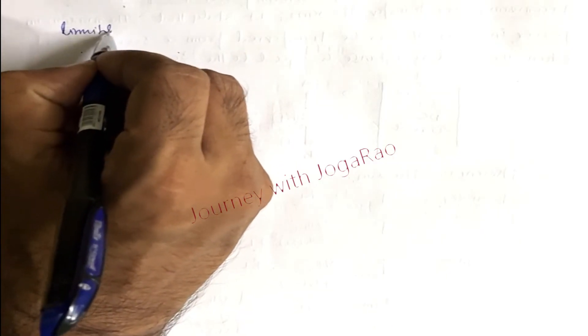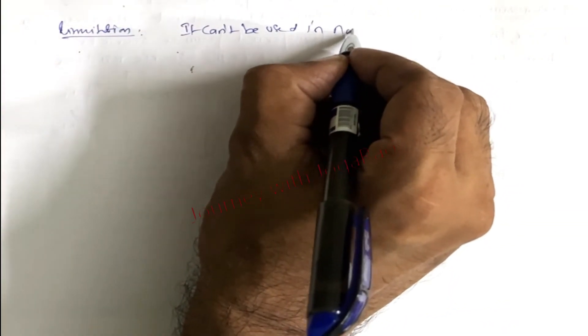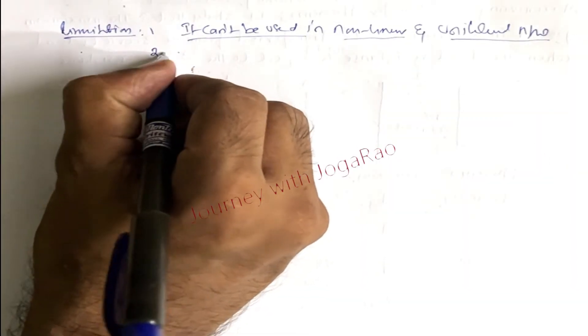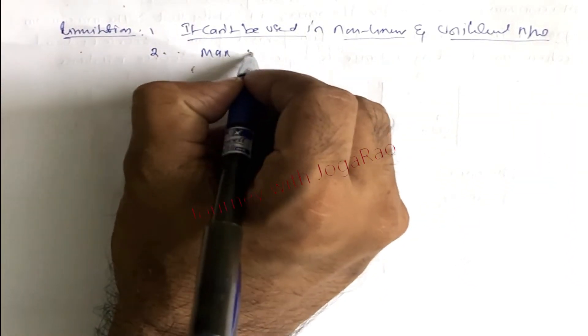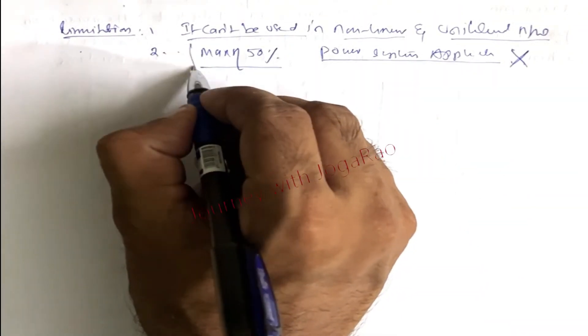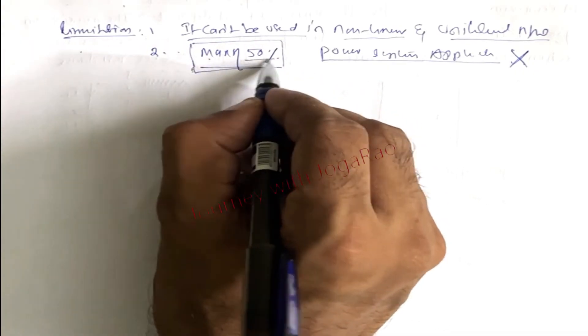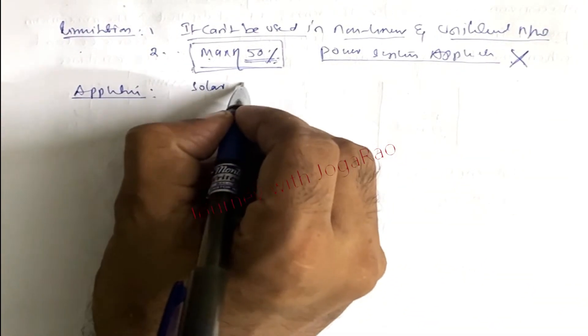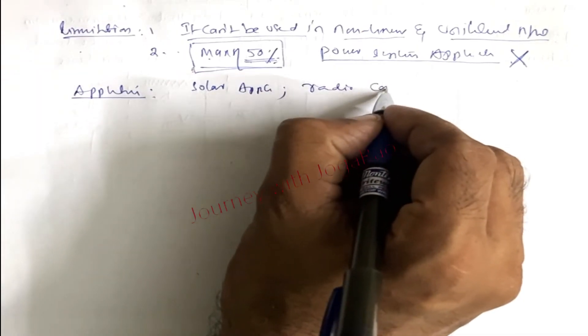There are limitations: Limitation 1 — it cannot be used in non-linear and unilateral networks. Limitation 2 — maximum efficiency is 50% only, so power system applications are not applicable. Applications include solar applications and radio communication applications.